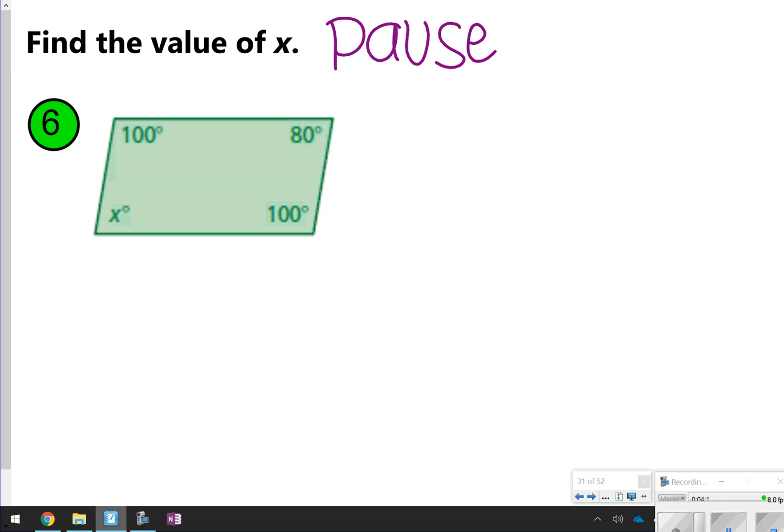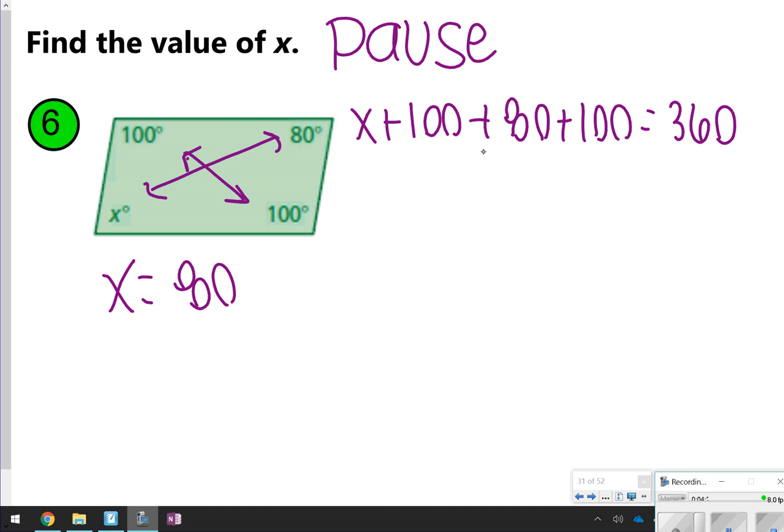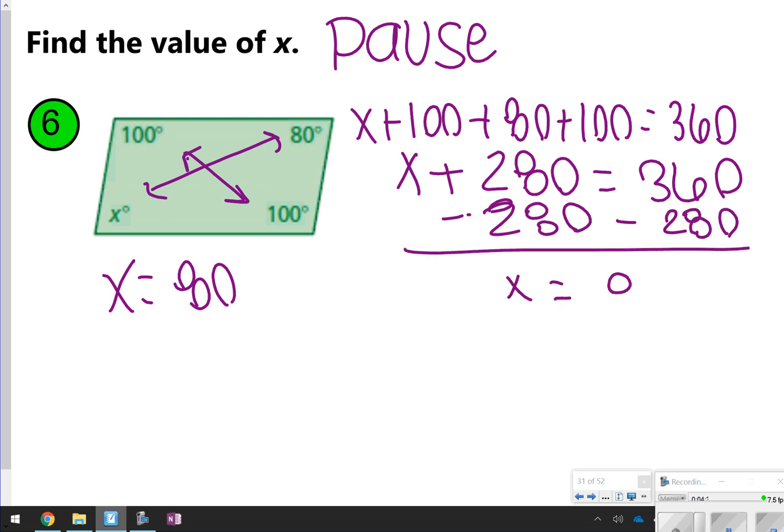The interesting thing about number 6 is it's a parallelogram, so your opposite angles are always equivalent. So 100 equals 100, and x will equal 80. If you wanted to, you could go ahead and double check your work. So here we are putting together our equation, combining any like terms, all the numbers, and then subtracting to 80, and you still get 80 degrees. Okay, but that's just a little hint about parallelograms for number 6.